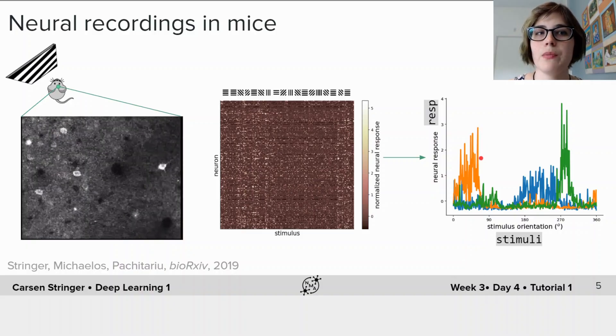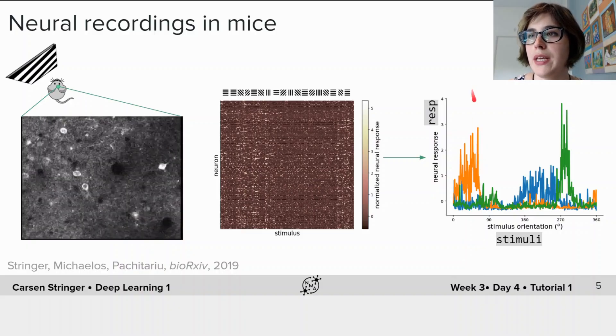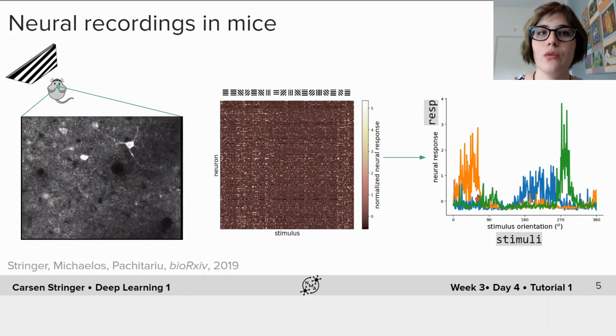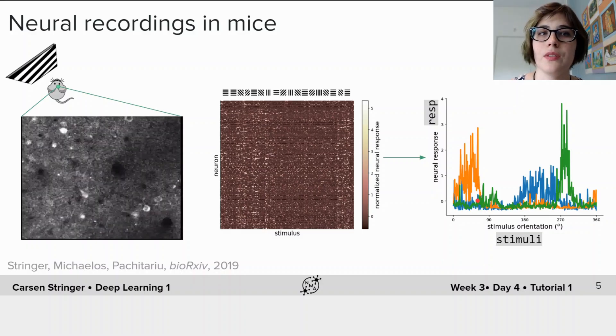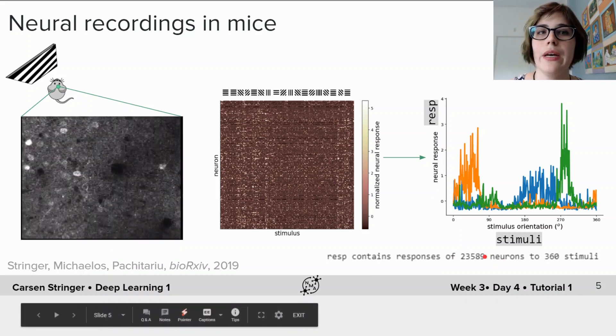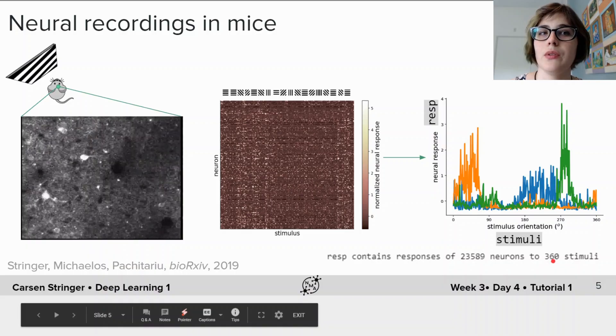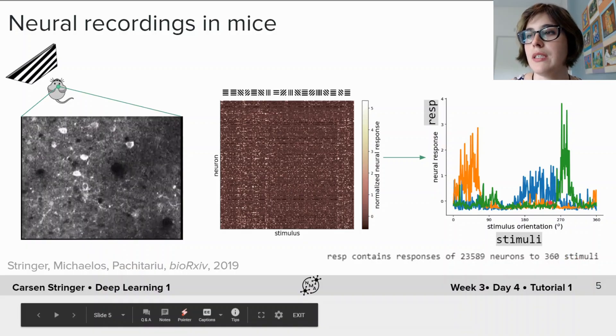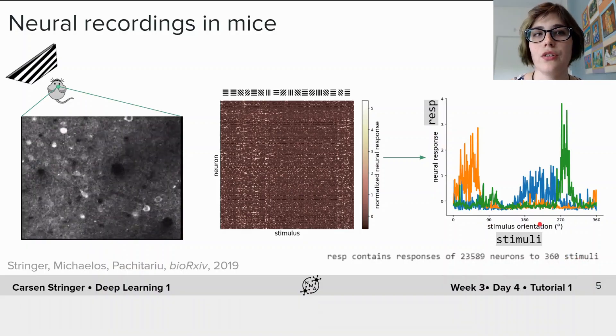We will use the response of all neurons in a single bin in order to predict which stimulus was shown. So we're going to be using the responses of 24,000 neurons to try to predict 360 possible stimulus conditions corresponding to each of the degrees of these different orientations.